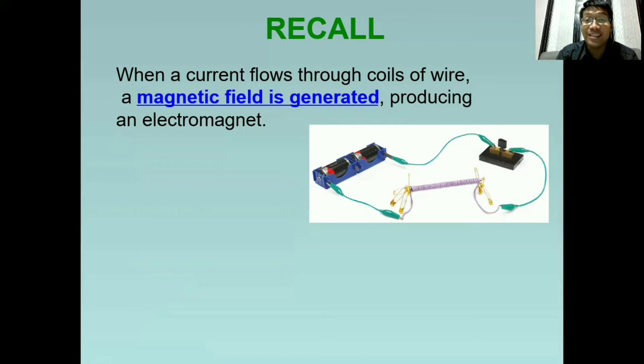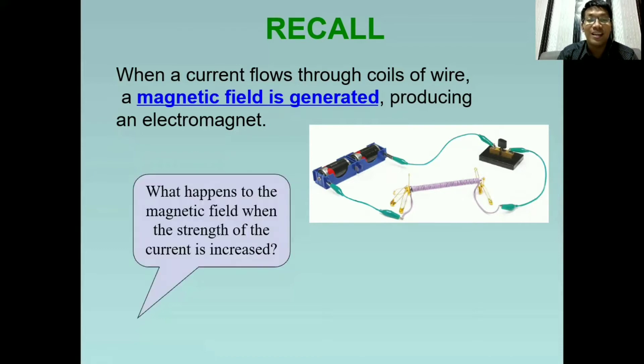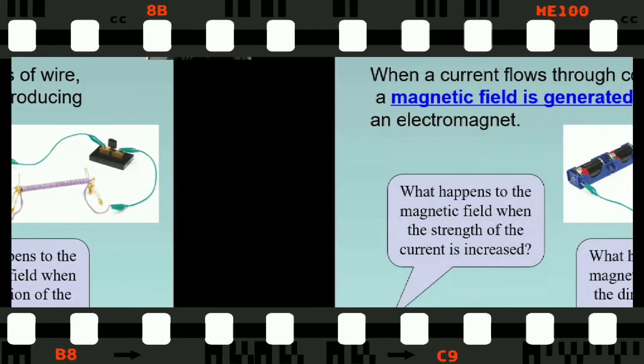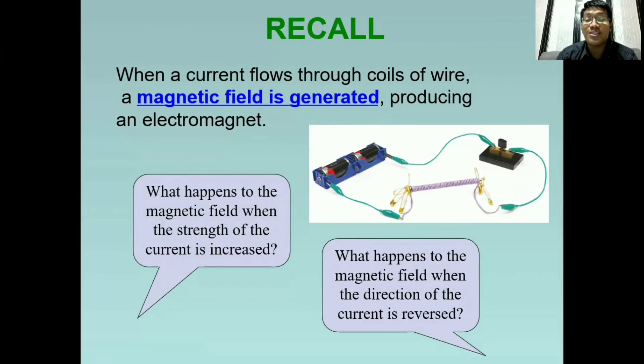For this lesson, we will answer these questions. What happens to the magnetic field when the strength of the current is increased? And what happens to the magnetic field when the direction of the current is reversed? Let us discover the answers as we go through with this lesson.